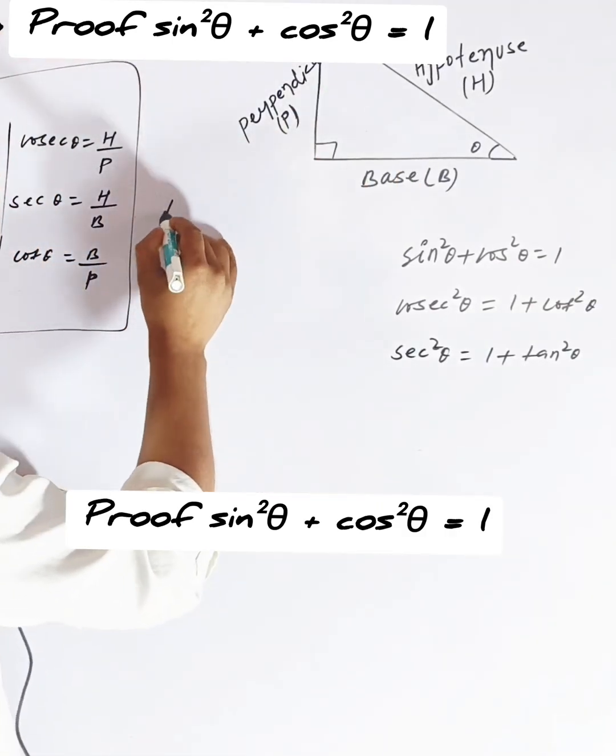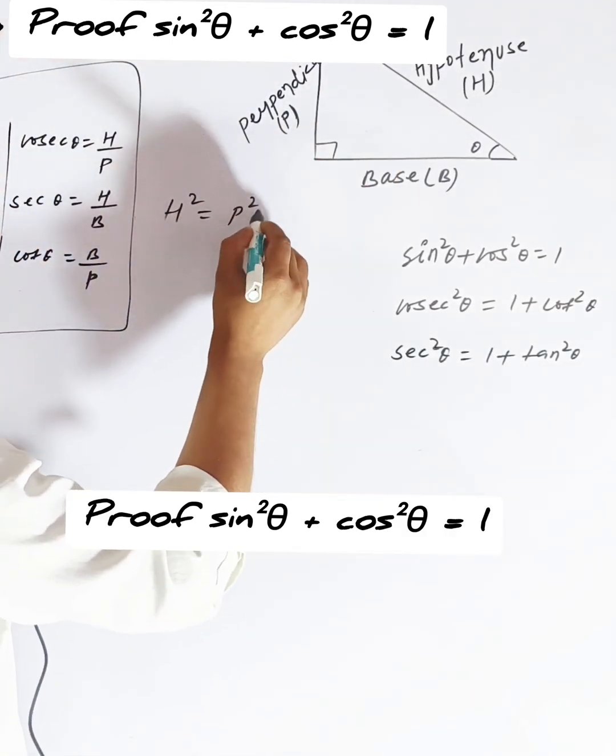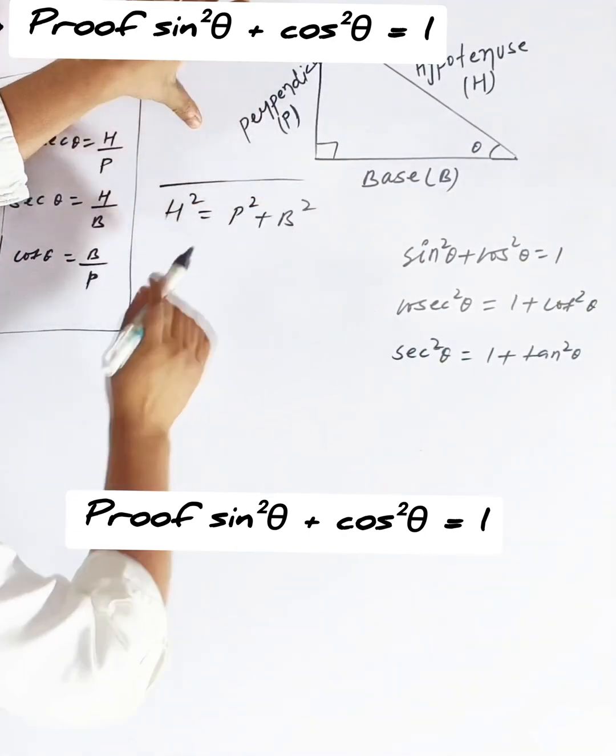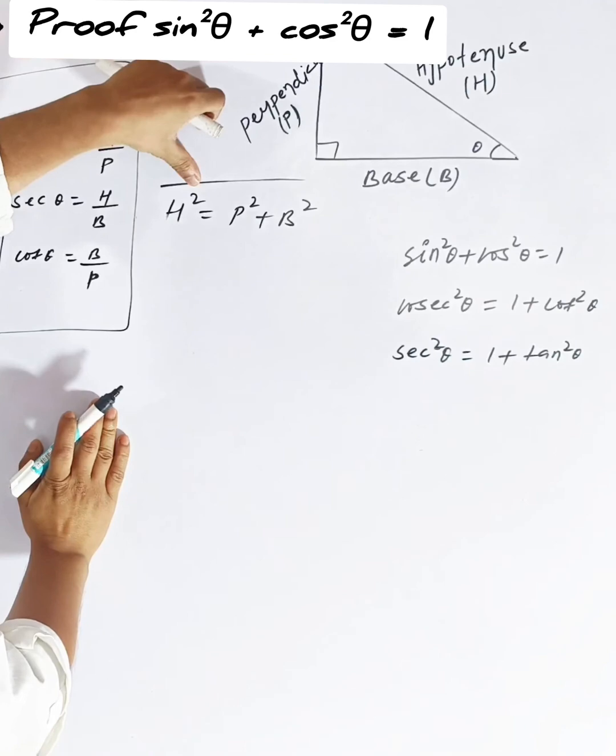In a right angle triangle, it's a simple thing: h squared equals p squared plus b squared can be written like this. If you have a triangle with a right angle, then it can be written like this.